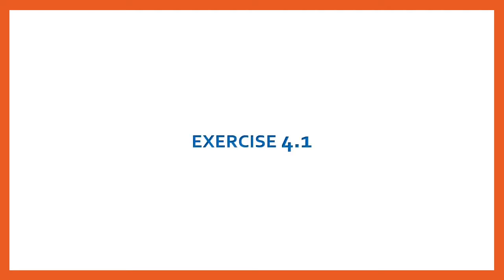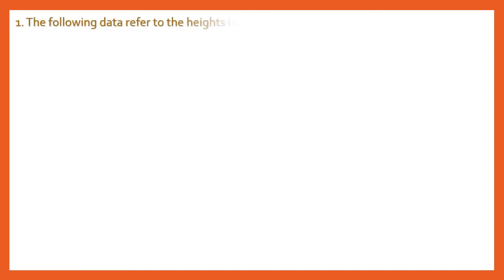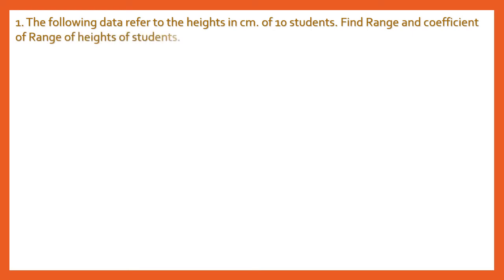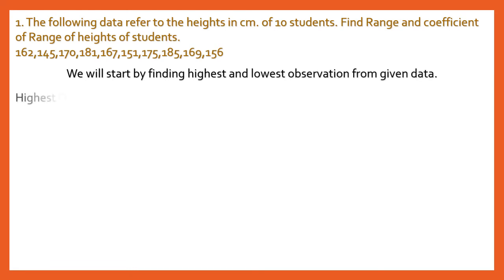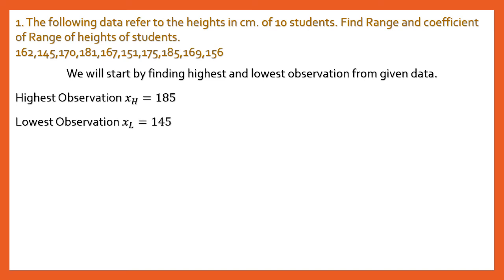Now let's start Exercise 4.1, which contains sums based on Range. Question 1: The following data refer to the heights in centimeters of 10 students. Find the range and coefficient of range. We start by finding the highest and lowest observations. From the data, the highest observation XH is 185 and the lowest observation XL is 145.